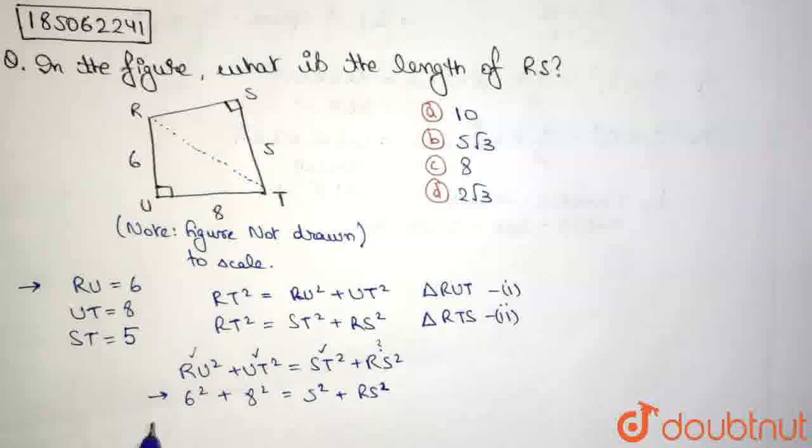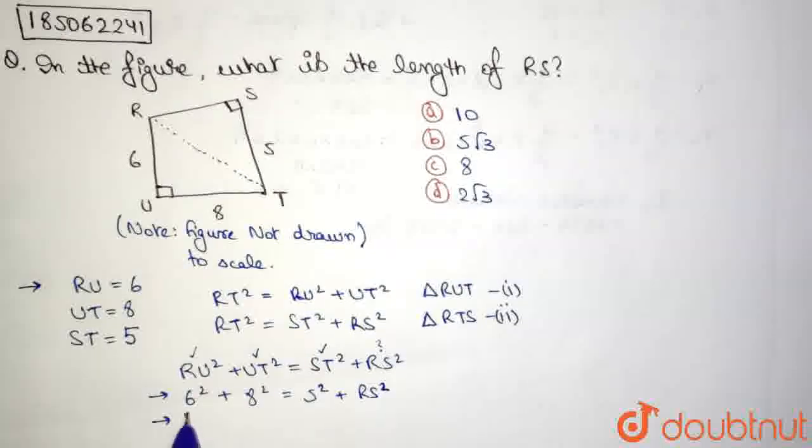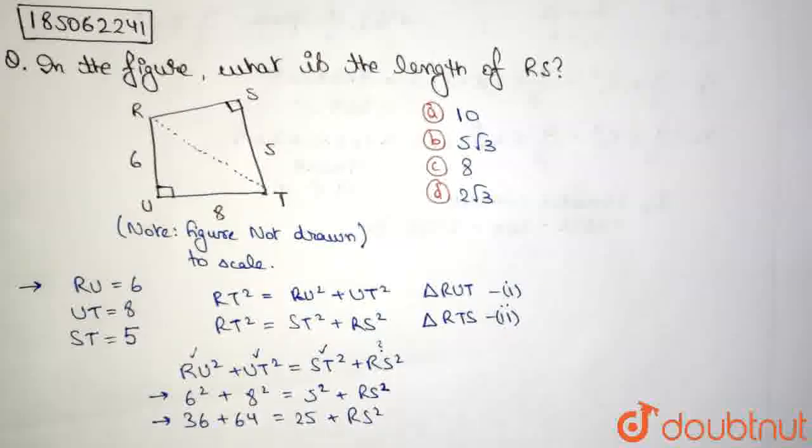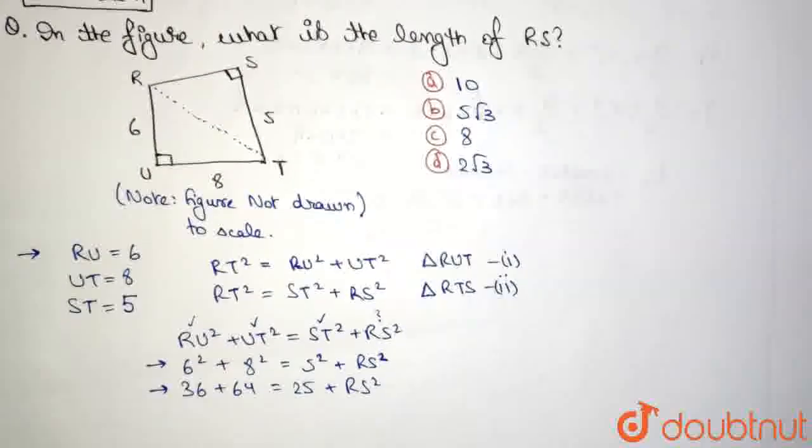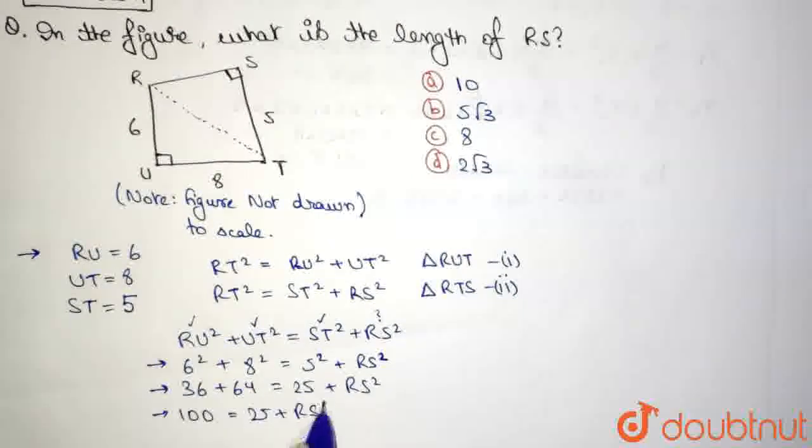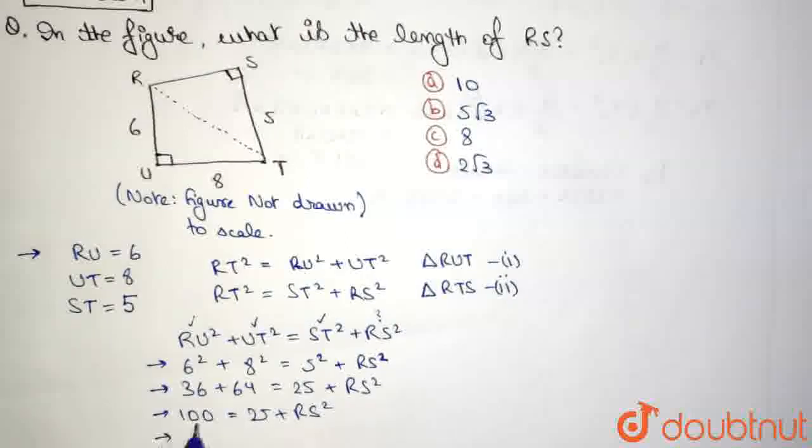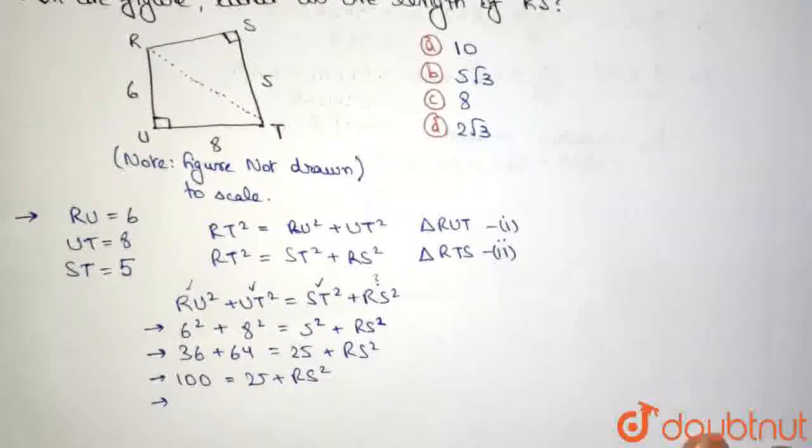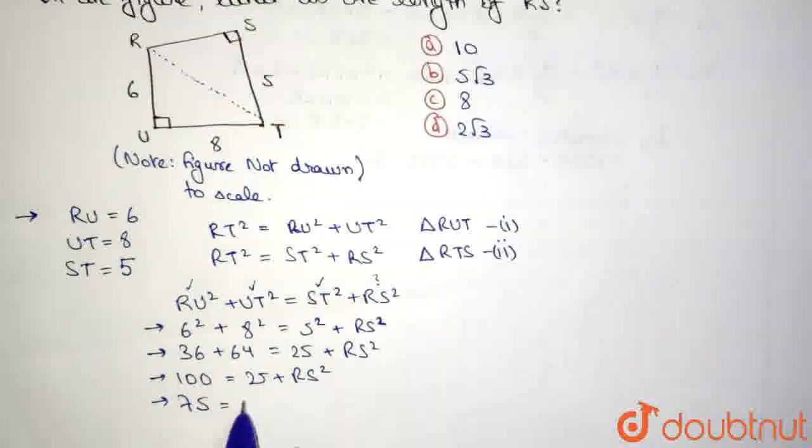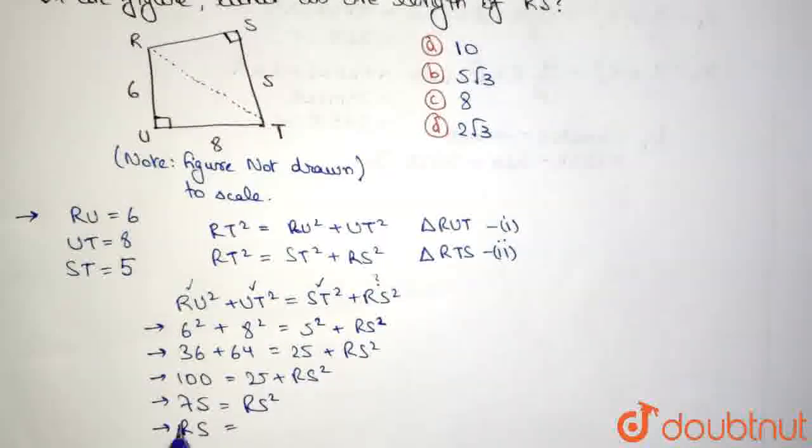If I calculate this, this gives us 36 plus 64 is equal to 25 plus RS square. Now, upon adding them up, we obtain 100 is equal to 25 plus RS square. Or I can say 100 minus 25, so we are subtracting 25 from both the sides. So we get 100 minus 25 becomes 75, and this 25 gets cancelled out. So this is equal to RS square.